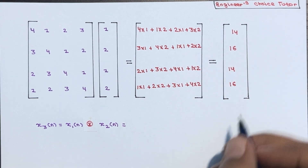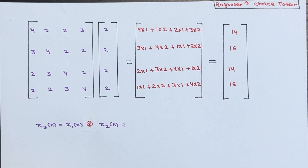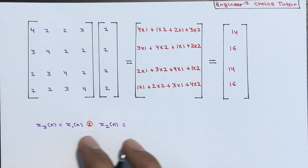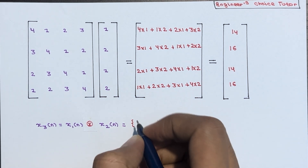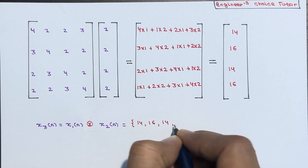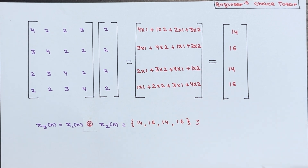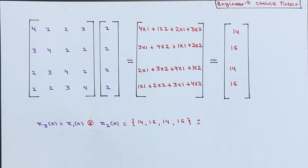So we get 14, 16, 14, 16. Therefore x3[n], which is the circular convolution of x1[n] and x2[n], is {14, 16, 14, 16}. This is the resultant sequence x3[n]. This is how you perform circular convolution using the matrix method. If you have any doubts, you can ask in the comment section. Thanks for watching.